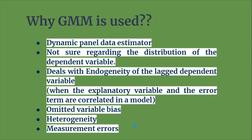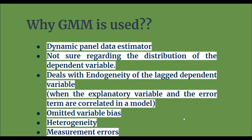Next is omitted variable bias. Employing a GMM model can control for omitted variable bias — that is, if you have omitted a significant variable from the regression model, then using GMM would control for the bias caused by the omission of a significant variable. GMM also deals with panel heterogeneity in the model. In a heterogeneous panel data model, the coefficients differ for each cross-section in the panel, so if you have panel heterogeneity, you can use GMM. It also controls for measurement error if any.